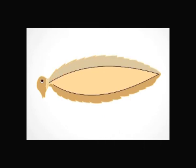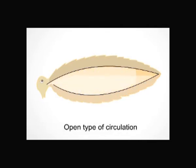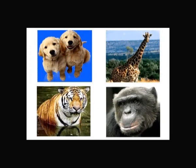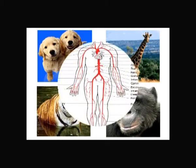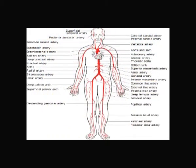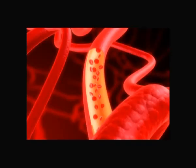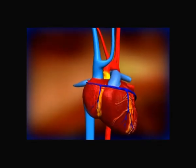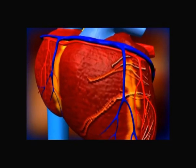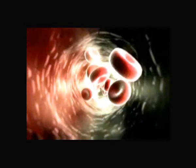In some animals, blood is found in large spaces of the body cavity and directly comes in contact with tissues — this is known as the open type of circulation, seen in the cockroach. Later animals developed special channels for the circulation of these fluids, such as veins and arteries, forming a circulatory system consisting of blood, blood vessels, and heart. Let us study the circulation of blood in different organisms.